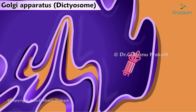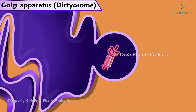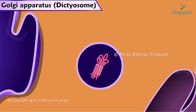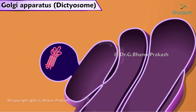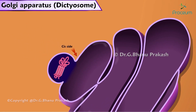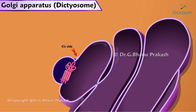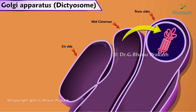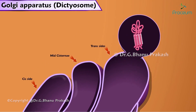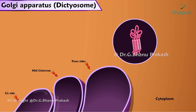Membranous vesicles bud off the rough endoplasmic reticulum containing newly synthesized proteins, and they fuse with the cisternae on the cis side of the Golgi apparatus. These proteins are then passed, via other vesicles, to the middle cisternae, and finally to the cisternae on the trans side, from which vesicles branch off into the cytoplasm.